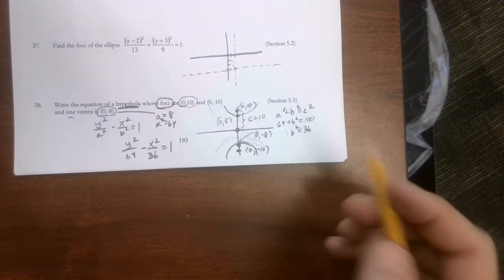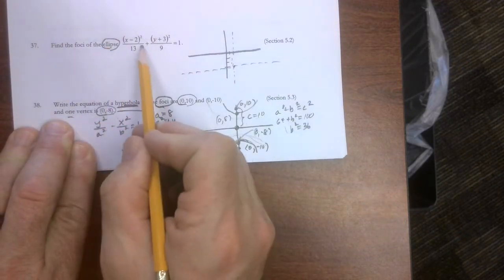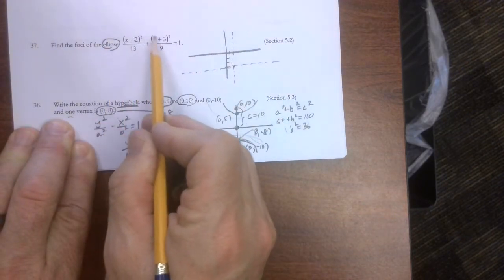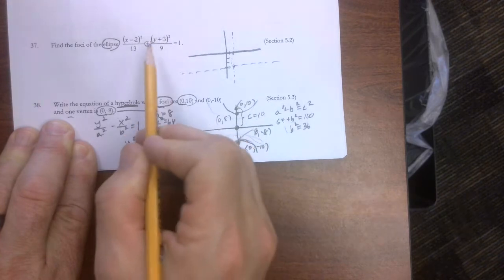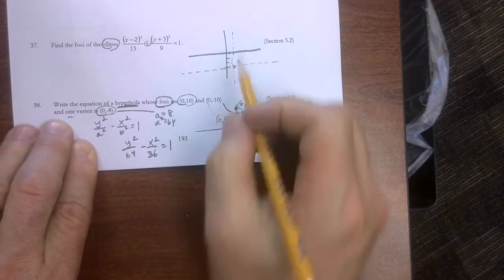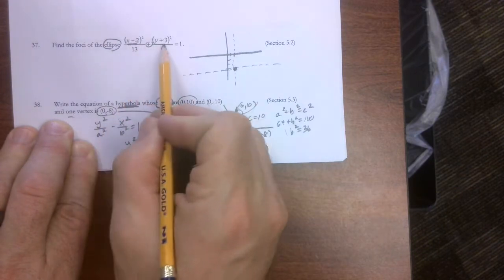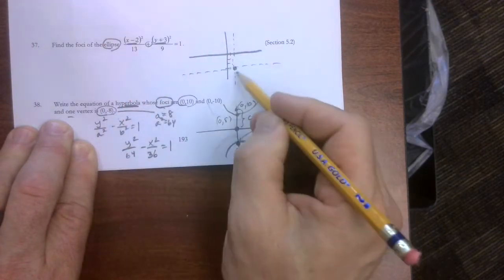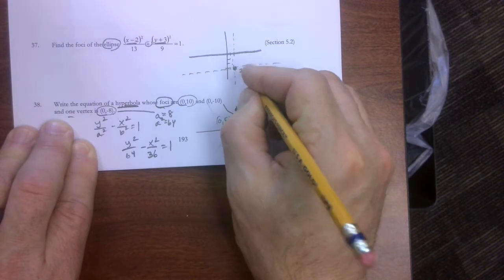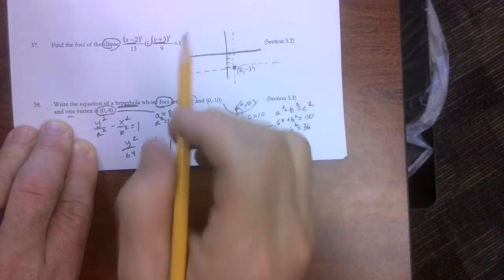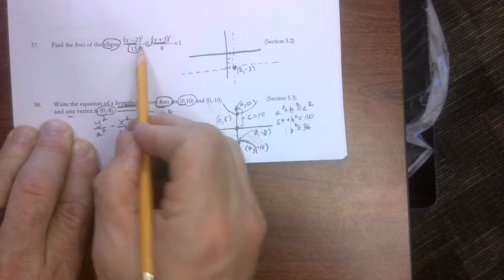All right, number 37 tells us it's an ellipse. We should be able to know that by looking at the squared stuff plus. I've already located the center of this ellipse. This tells us move 2 to the right. This tells us move down 3. And there it is. 2, negative 3.